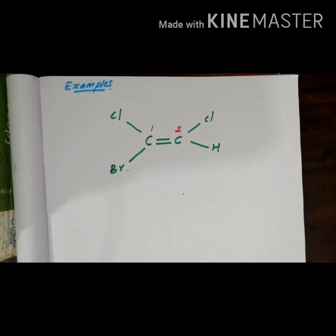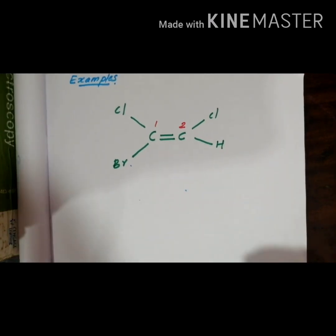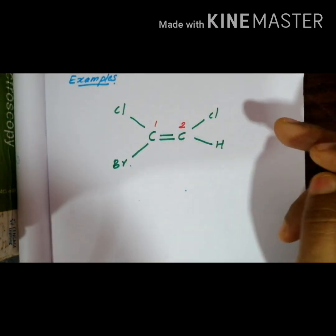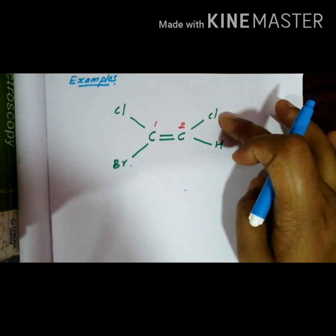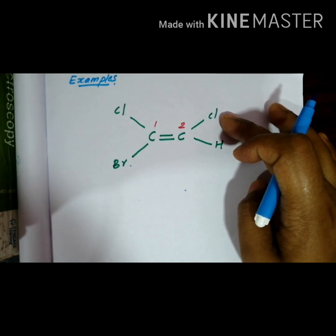We can do more examples for this. I can select a compound C double bond C which is attached with different compounds. Two are identical but that's not a problem.